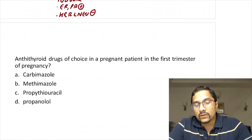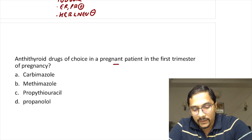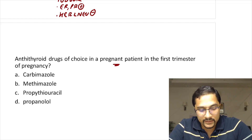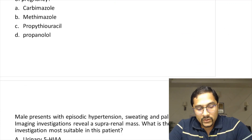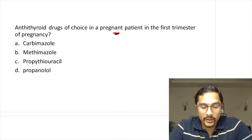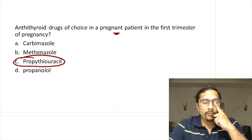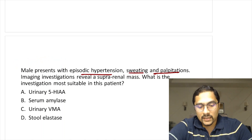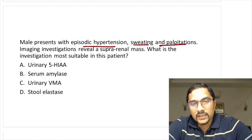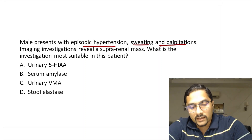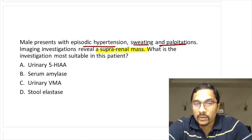Moving on to thyroid questions. Antithyroid drug of choice in a pregnant patient in the first trimester of pregnancy: the answer is propylthiouracil (PTU). A male patient comes with episodic hypertension, sweating, and palpitations; imaging reveals a suprarenal mass.